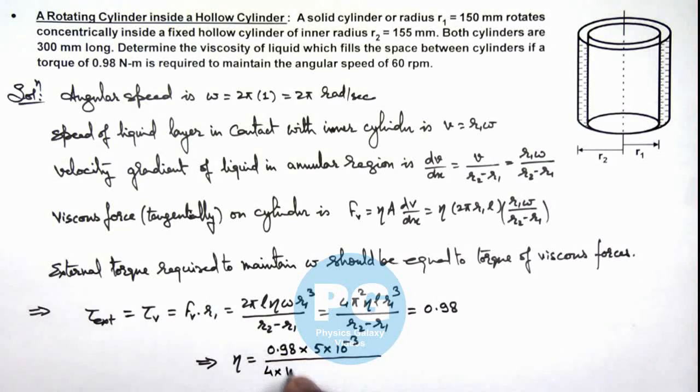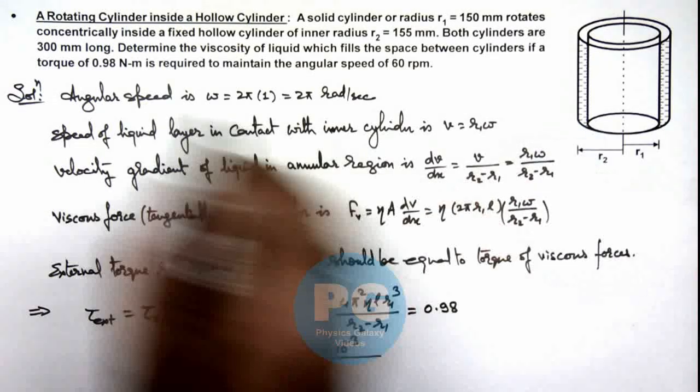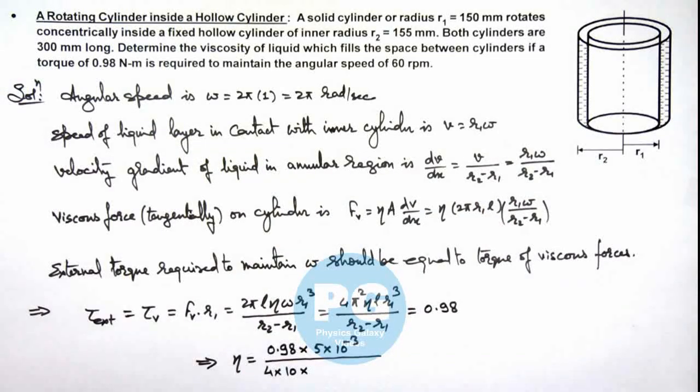Here π² we can take as 10, multiplied by L, the length of cylinder is given as 300 mm, which is 30 centimeter. We can consider it to be 0.3.